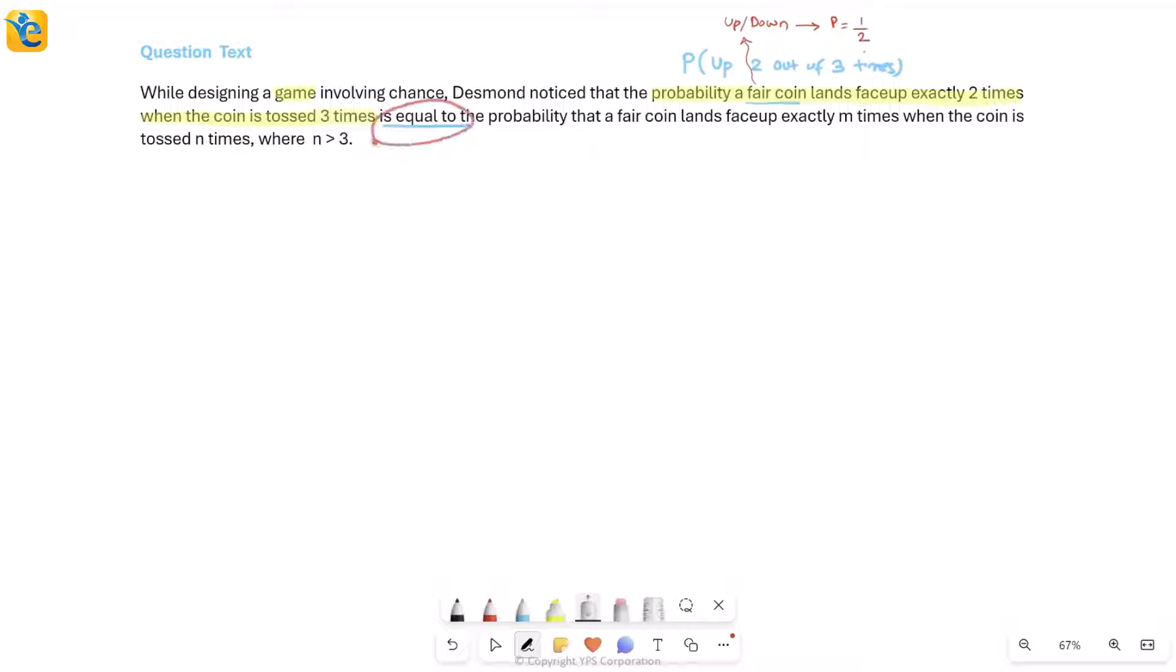It talks about another probability which is equal to this first probability. This is about a fair coin landing face-up exactly m times when it is tossed n times - a more complicated way of simply saying the probability of coming up m out of n times. It also adds that n is greater than three. Why? Just to help you distinguish between these two scenarios. If n were also three, then one m that would definitely work is two. But they wanted us to understand that this is a different scenario.